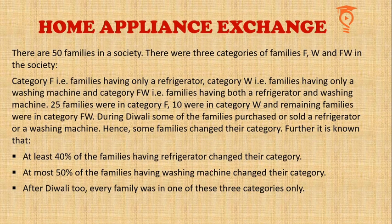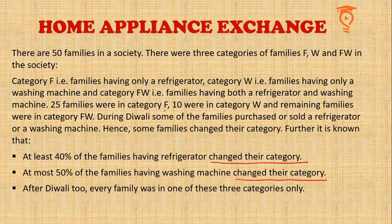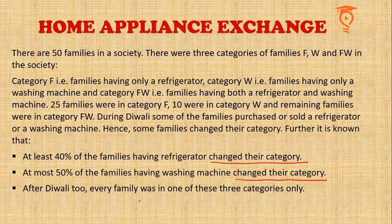This is the small data given overall for the set. Reading this, you would realize it's a Venn diagram based set. Changing the category means going from F to W, or from W to FW, or from FW to F — that is what they mean by changing the category. Even after all the exchanges, no category had zero families. It's quite an easy set. Let's directly get to the questions.